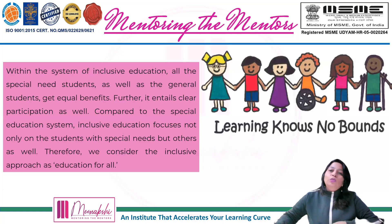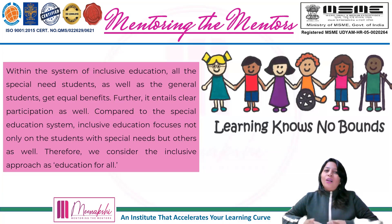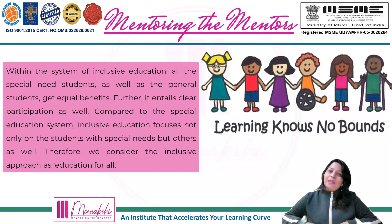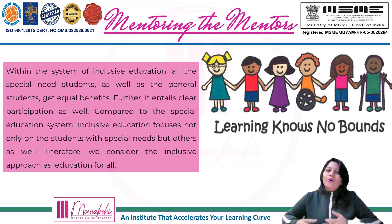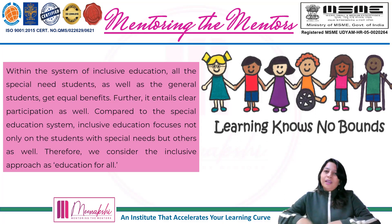Let's move ahead with the inclusive one — koi differentiation nahi hai. Within the system of inclusive education, all the special needs students as well as the general students get equal benefits. Further, it entails clear participation as well — sab ko participation ke mauke diye jaate hain, unko choice diya jata hai. Student voice and choice — as per their abilities, talents, and interests, they choose the subjects and activities so that they all can come forward. No discrimination — that is as per their interest level.